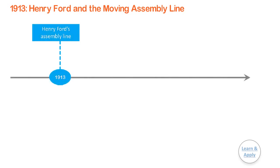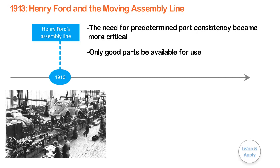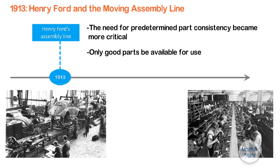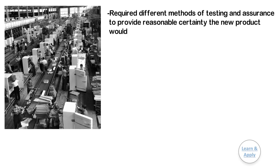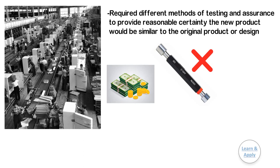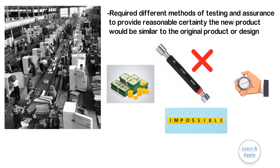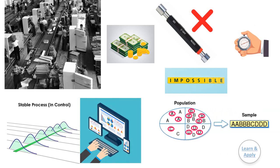In 1913, Henry Ford introduced the Moving Automobile Assembly Line, making the need for predetermined part consistency even more critical. It was critical that only good parts be available so that the production assembly line would not be forced to slow down or stop while a worker sorted parts. With the industrial revolution in full swing, ever-increasing production volumes required different methods of testing and assurance. It was no longer practical to test each piece against GO and NO-GO gauges, as such testing was expensive, unacceptably time-consuming, and in some cases impossible. Therefore, methods to monitor the consistency of the process that produces the parts, and the use of sampling rather than 100% inspection, were becoming necessities.